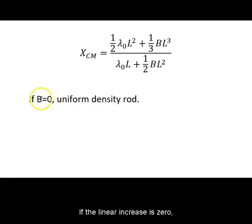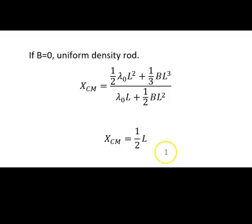If the linear increase is 0, we should get back the uniform density rod. So terms disappear, and we get the center of mass as one half L.